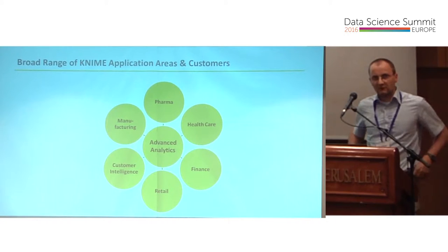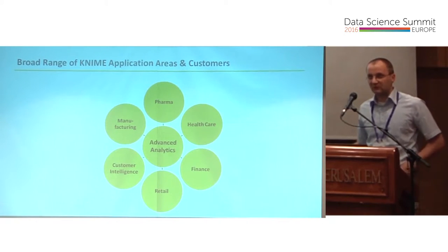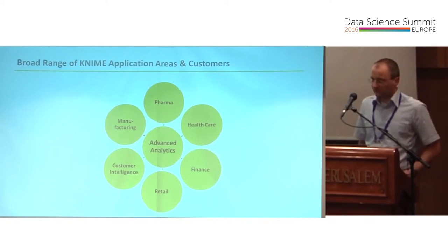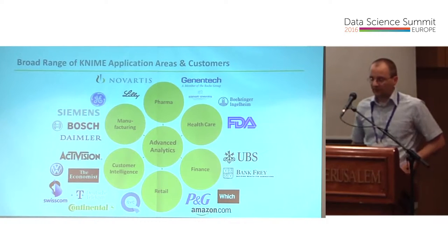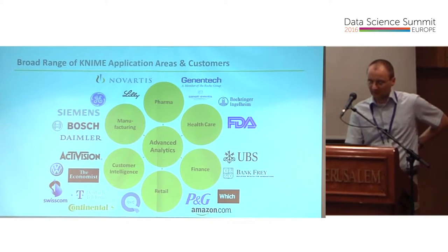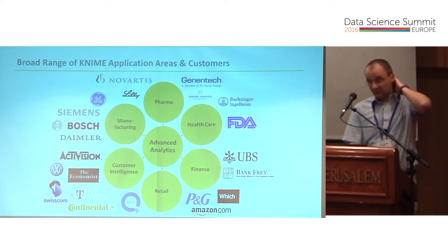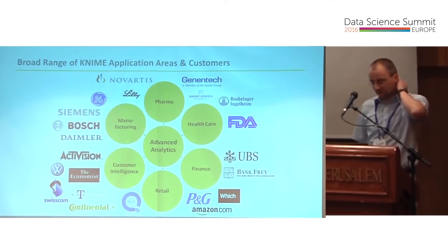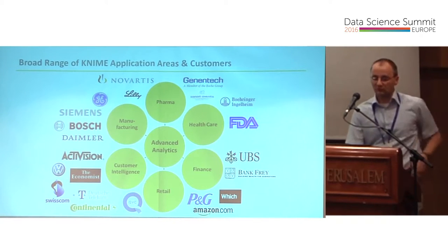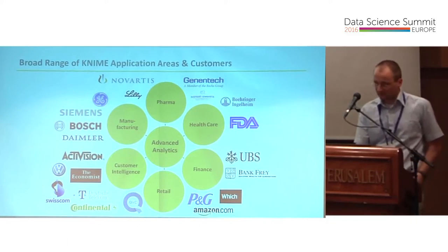KNIME is used broadly across industries — anyone interested in analytics, advanced analytics, or even just pre-processing. It's free to use. In terms of customers, we have a strong footprint in pharma, with worldwide deployments. IoT is very active — we have good collaborations with Siemens and Bosch. Activision uses KNIME for in-game analytics, tracking user behavior in games like Call of Duty. We also have customers in telco, retail, Procter & Gamble, and Amazon.